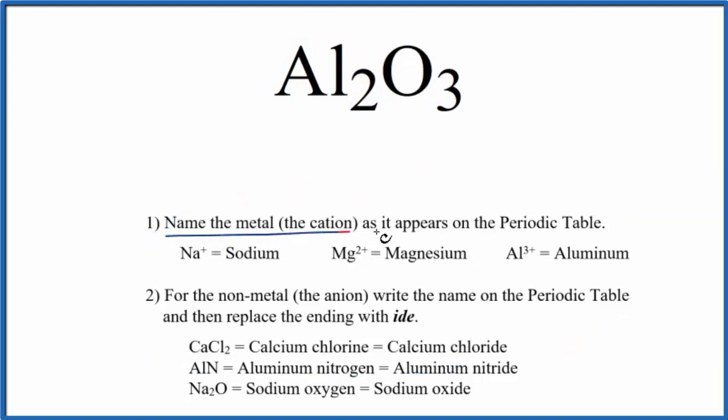So we write the name for the metal as it appears on the periodic table. So Al, that's the metal, so we write aluminum.